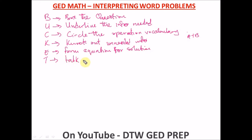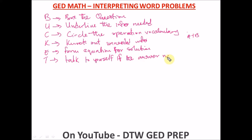The final letter T means talk to yourself — check if your answer makes sense. In an exam you can talk to yourself quietly. A lot of logical thinking goes into word problems, so talk to yourself and check your answer. If the answer makes sense, take your option and move forward.